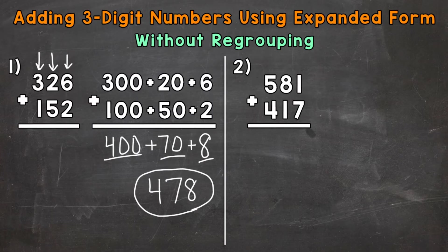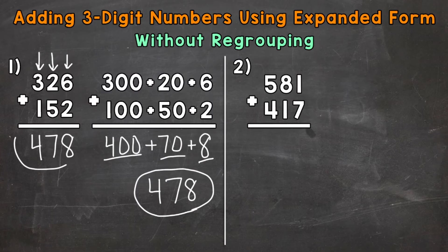Now if we were to solve this using the problem without Expanded Form, we would get the same thing: six plus two is eight, two plus five is seven, three plus one is four — 478. Using Expanded Form, like I mentioned earlier, really breaks the problem down and shows us exactly what's going on within the problem, giving us a better overall understanding of addition.